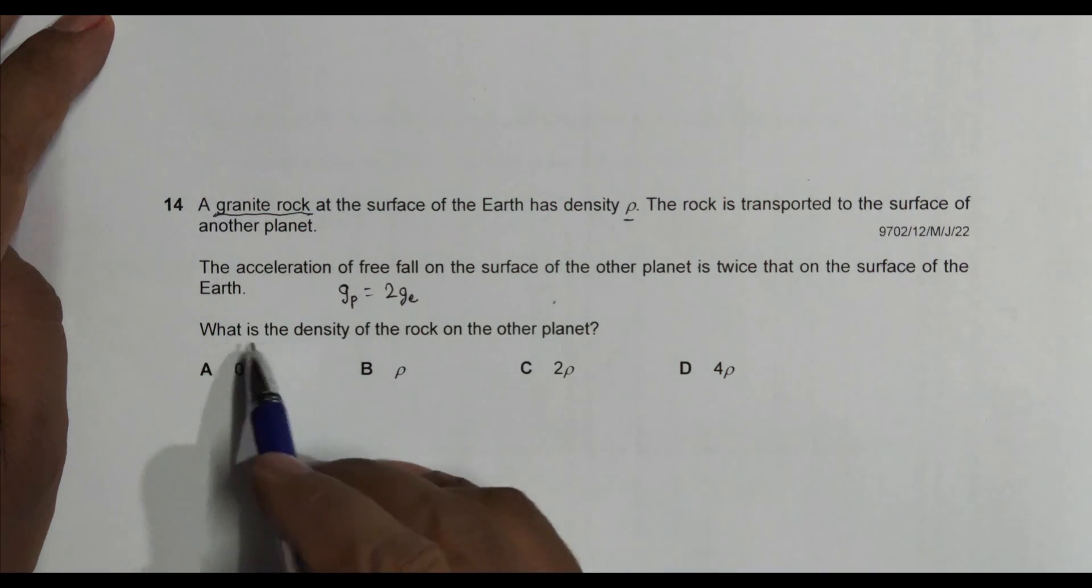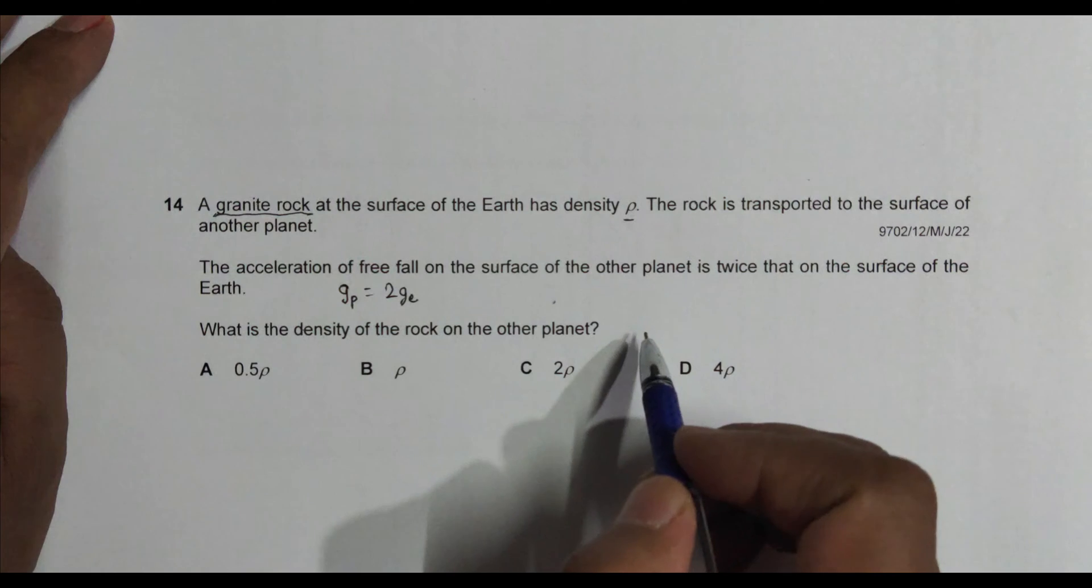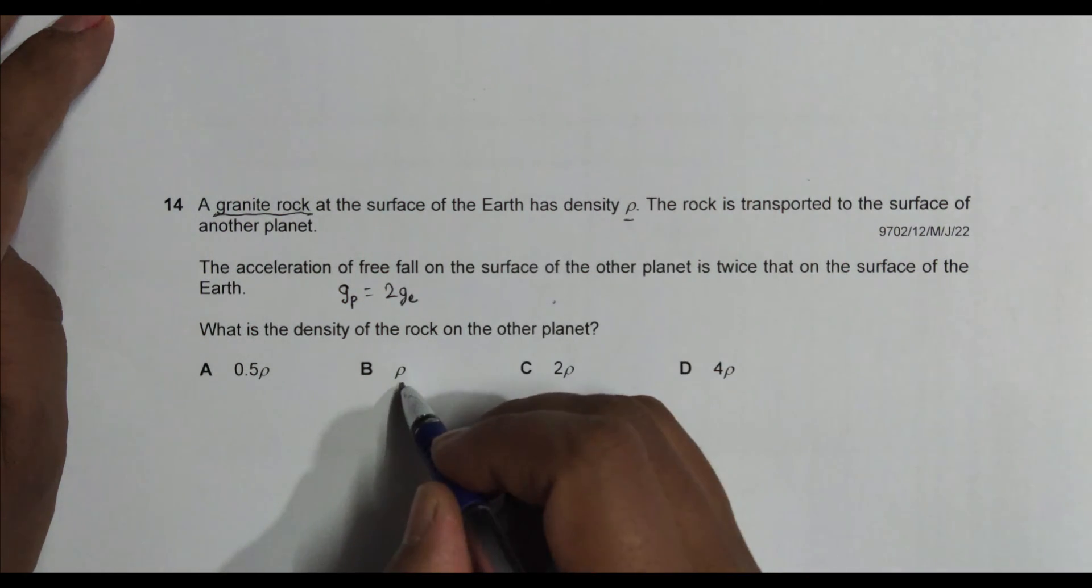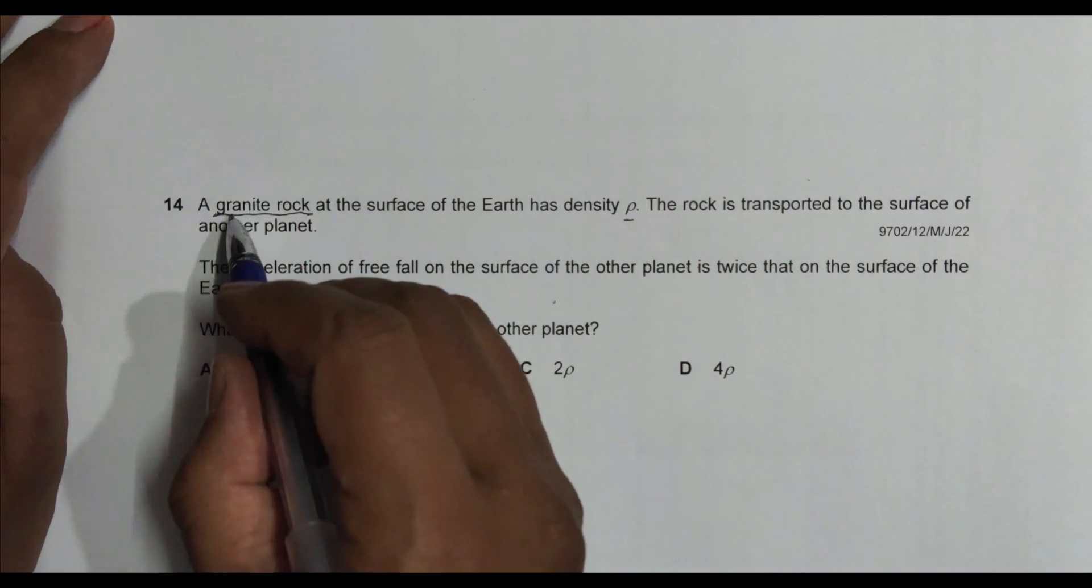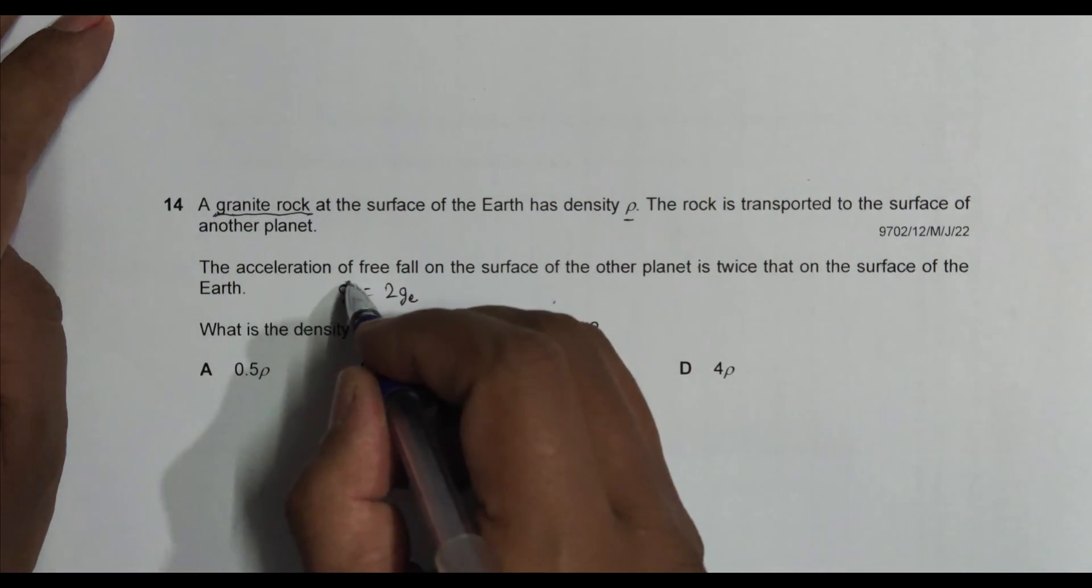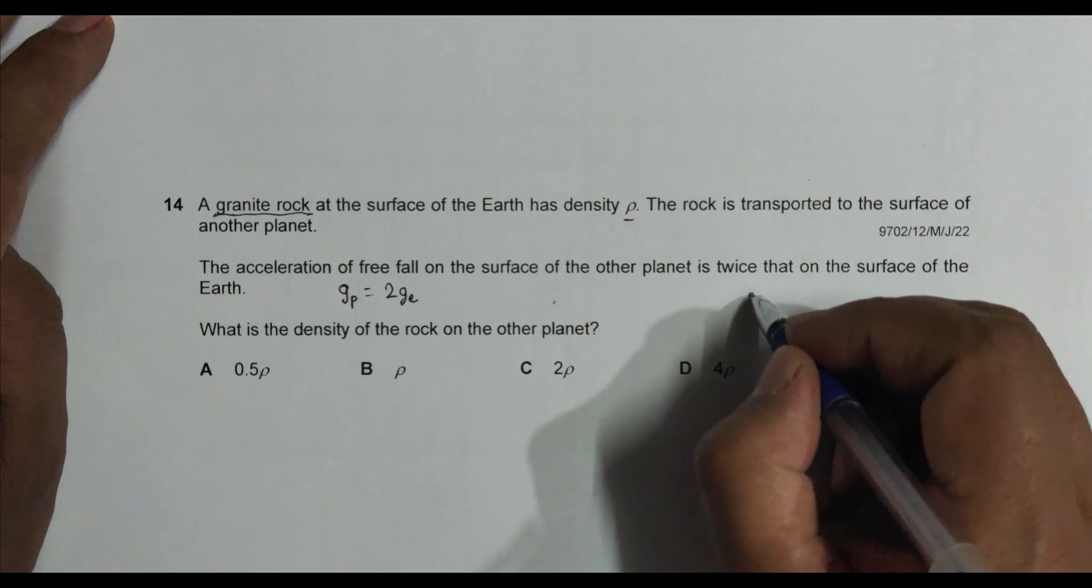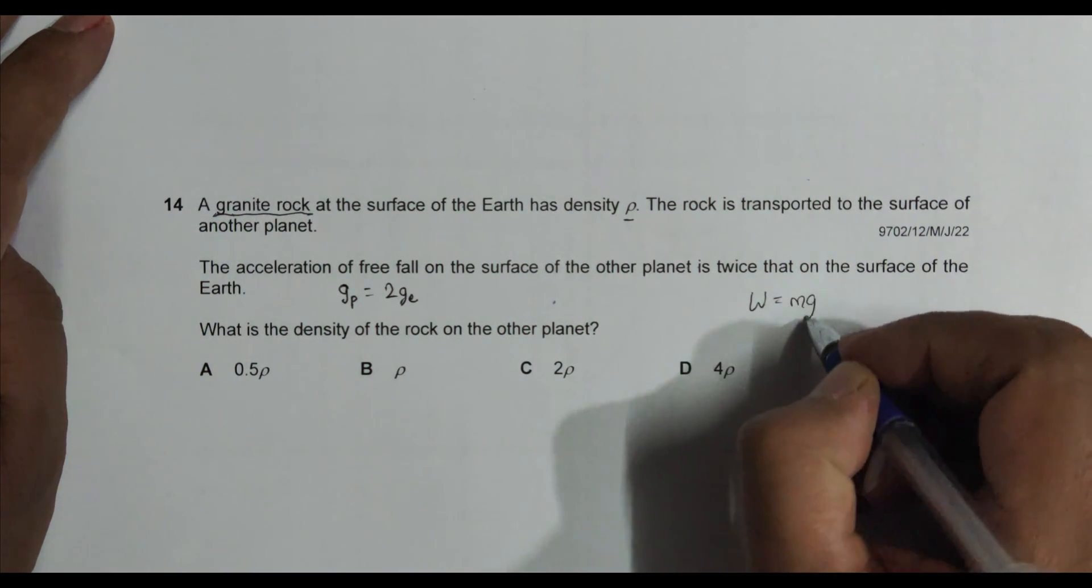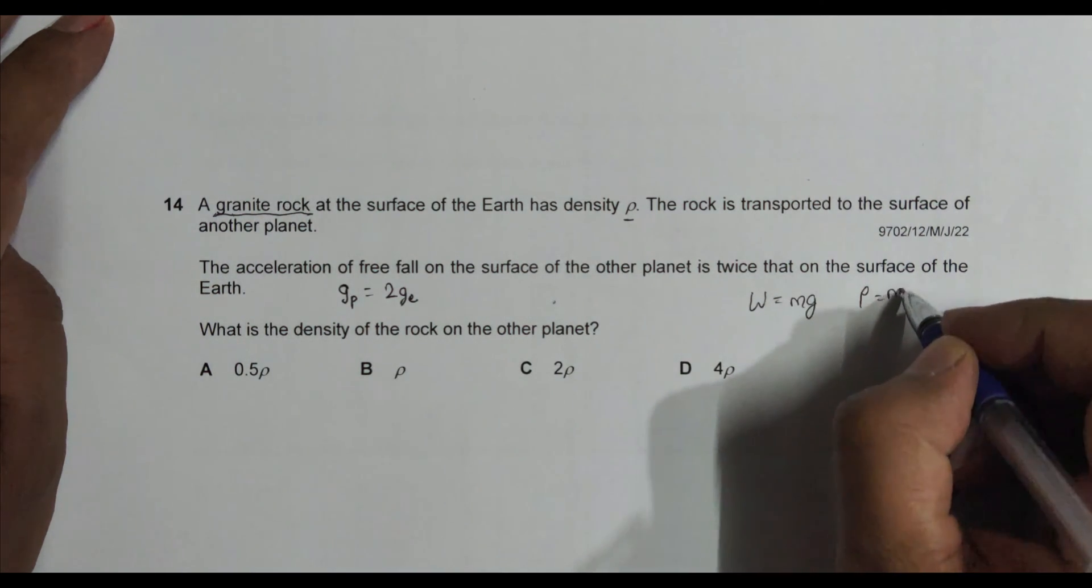What is the density of the rock on the other planet? So the density is ρ. It is ρ because the material is the same. Material is the same, so density should be ρ, and the density is not affected by g. The weight is affected by g, but density is not.